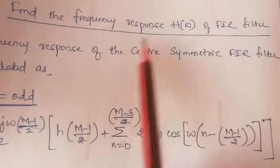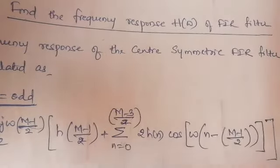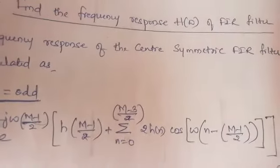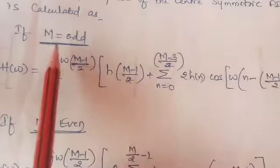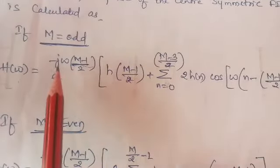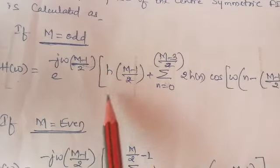Last step, find the frequency response H(ω) of FI filter. The frequency response of the center symmetric FI filter is calculated as two cases we are getting. If the order of the filter is even and odd. If M equal to odd, then we have to use this formula. H(ω) equal to e to the power minus jω multiplied by (M minus 1) divided by 2.